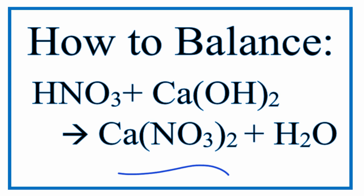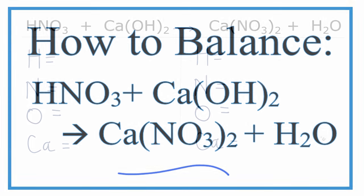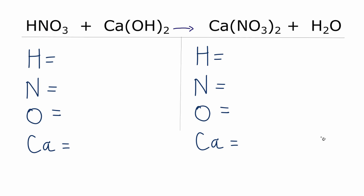To balance this equation, nitric acid plus calcium hydroxide yields calcium nitrate plus water. I've written down the atoms that we find on each side of the equation. So let's figure out how many of each we have on each side.